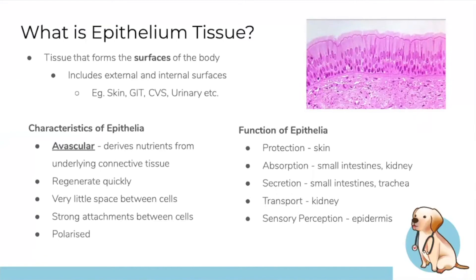Characteristics of epithelium: it's avascular — if you only scrape the top layer of skin, no blood comes out. It regenerates quickly, and there's very little space between cells. Functions include protection (skin prevents bacteria from harming the body), absorption (small intestine and kidney), secretion of hormones and mucus, transport in the kidneys, and sensory perception in the epidermis.